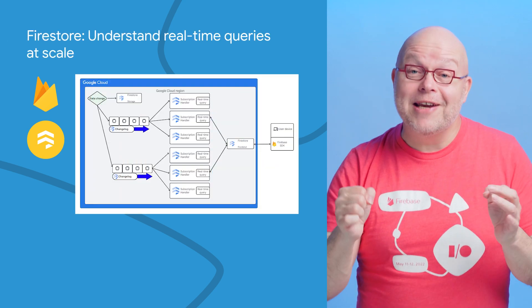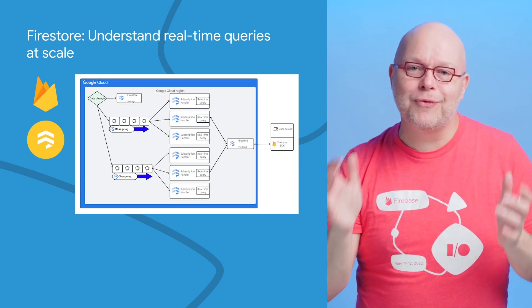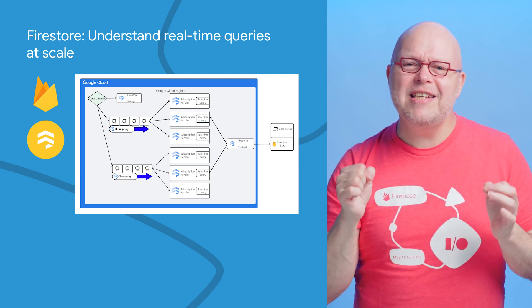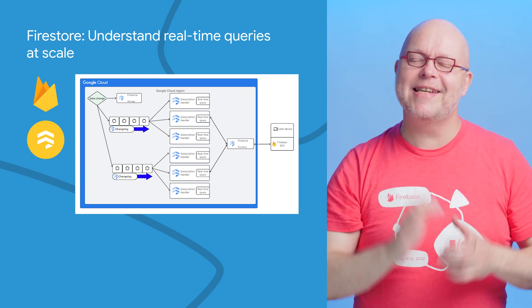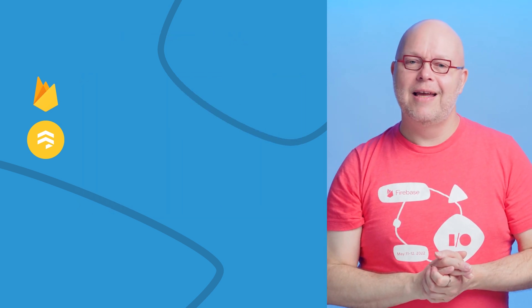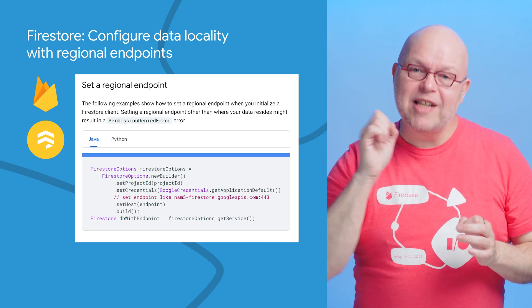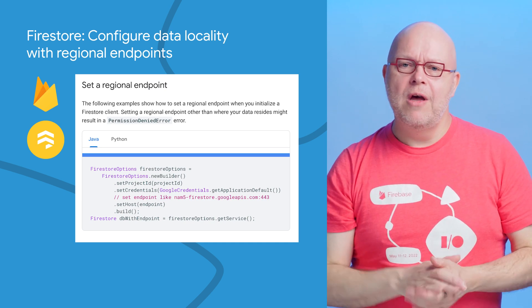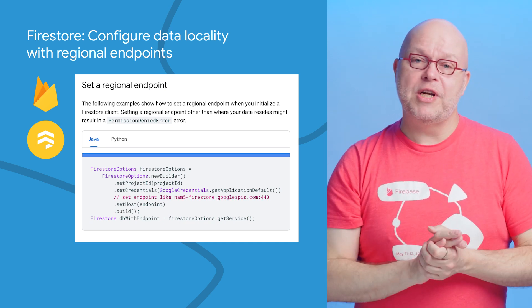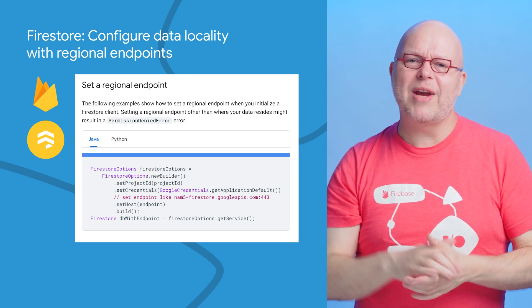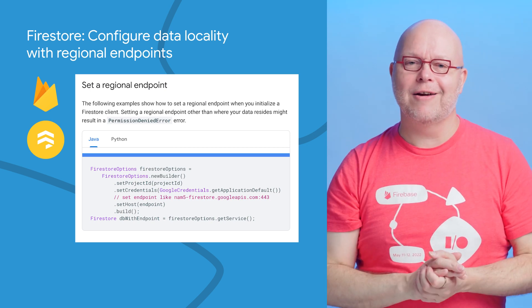If you're curious about Firestore's internals and how it scales to large numbers of users and operations, our engineering team has written a new article called 'Understand Real-Time Queries at Scale.' And while every Firestore database is tied to one specific region, occasionally its traffic might get routed through a different region. If you want to prevent this, you can now configure a regional endpoint in your code, as shown here.